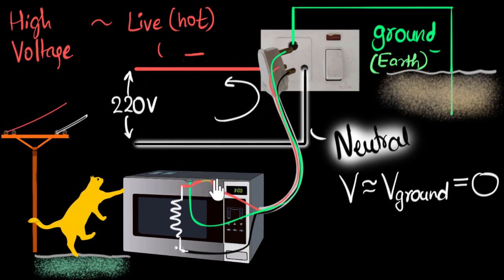So in short, if there is any current leaking due to any fault, the ground wire ensures that we don't get electrocuted.